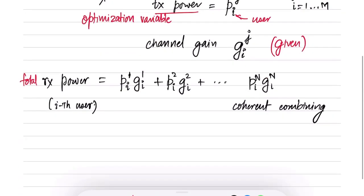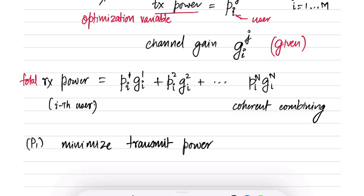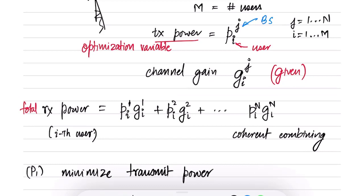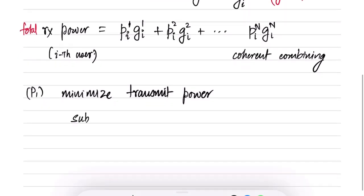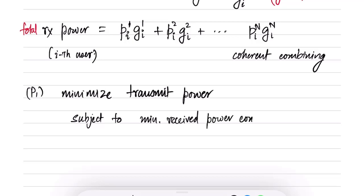One example problem we can consider is to minimize the transmit power. We choose the transmit powers to minimize total power, but minimizing transmit power does not mean transmitting at zero power, because then no one will get good enough signals. So we minimize while subject to certain minimum received power constraints.